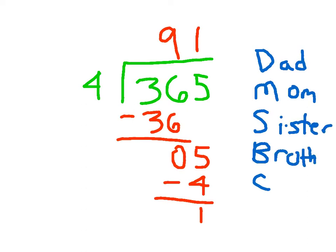These stand for the different steps in the division process. The dad stands for divide. The mom stands for multiply. The sister stands for subtract. The brother stands for bringing down. And the cat goes meow — the cat is the check.